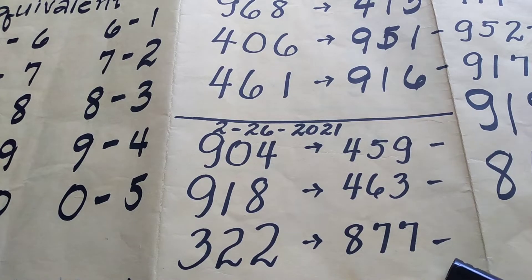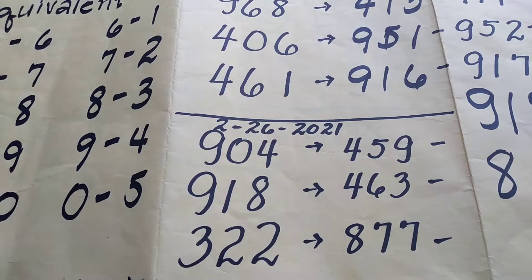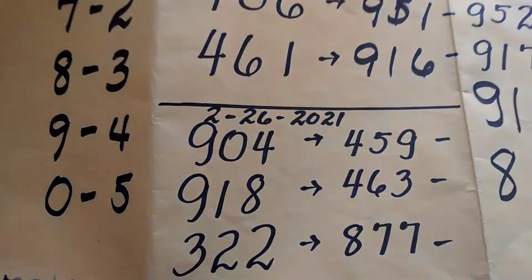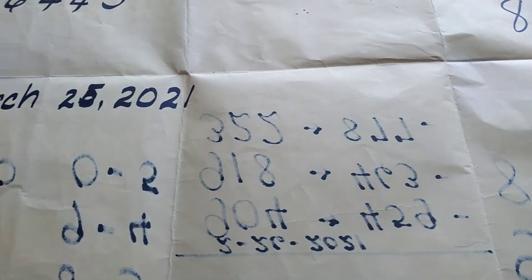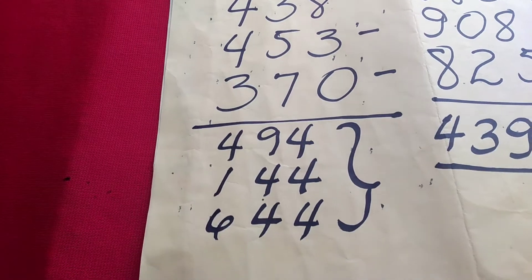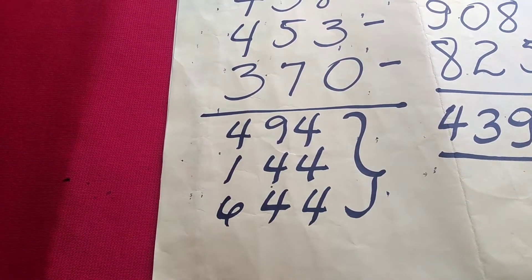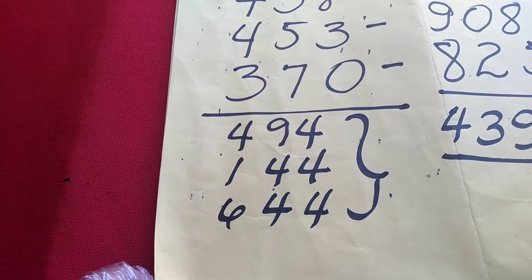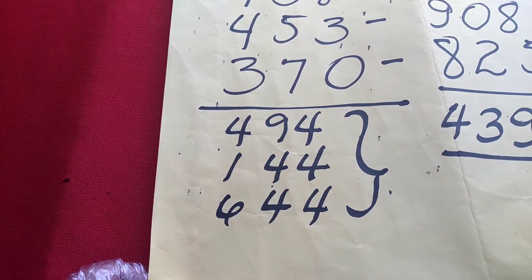So kahapon, yung ating nagsilabas na mga numero ay bumalik. Sila ay naging starring kahapon. Katulad nito: 4, 9, 4, 1, 4, 6, 6, 4, 4. Ang 6, 4, 4 ito ay naging 6, 0, 4.